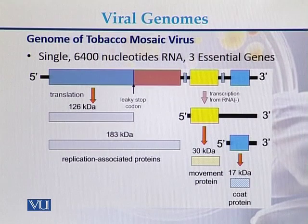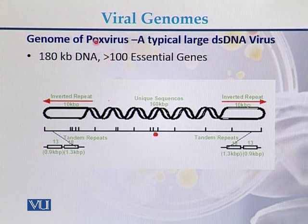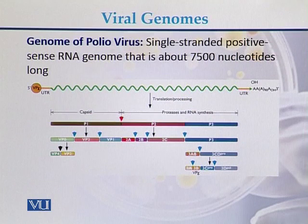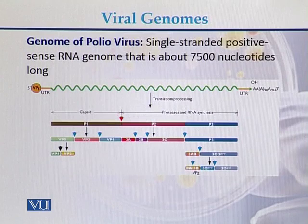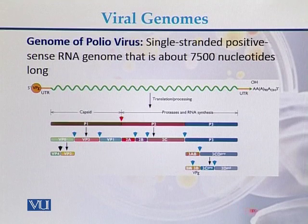Another example is the genome of pox virus, a typical large double-stranded DNA virus. Its genome consists of 180 kb DNA with approximately 100 genes. The polio virus is a single-stranded positive-sense RNA genome approximately 7,500 nucleotides long, encoding specific polypeptides and proteins.